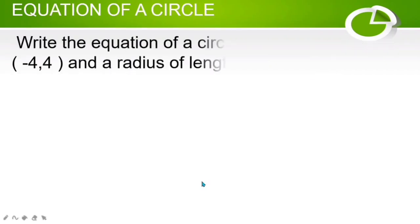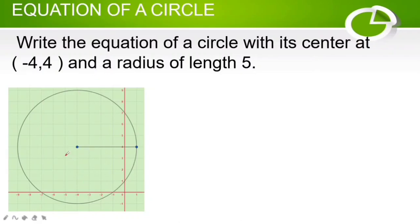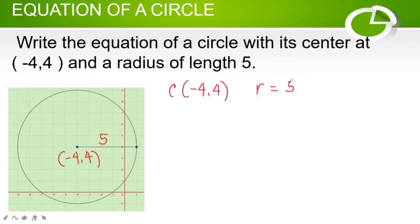Let's proceed to the next problem: write the equation of a circle with its center at point (−4, 4) and a radius of length 5. According to the problem, the center is at (−4, 4) and the radius is 5 units, so r = 5. When the center is not at the origin, we use the standard form: the square of the quantity (x − h) plus the square of the quantity (y − k) is equal to r squared.